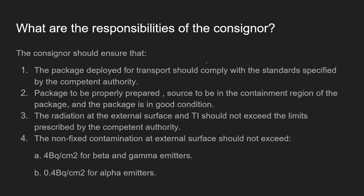The consignor has multiple responsibilities. The package deployed for transport must comply with standards specified by the competent authority. The package must be properly prepared with the source in the containment region and in good condition. The radiation at the external surface and the transport index should be within limits specified by AERB. Non-fixed contamination at the external surface must not exceed 4 Bq/cm² for beta and gamma emitters, and 0.4 Bq/cm² for alpha emitters.